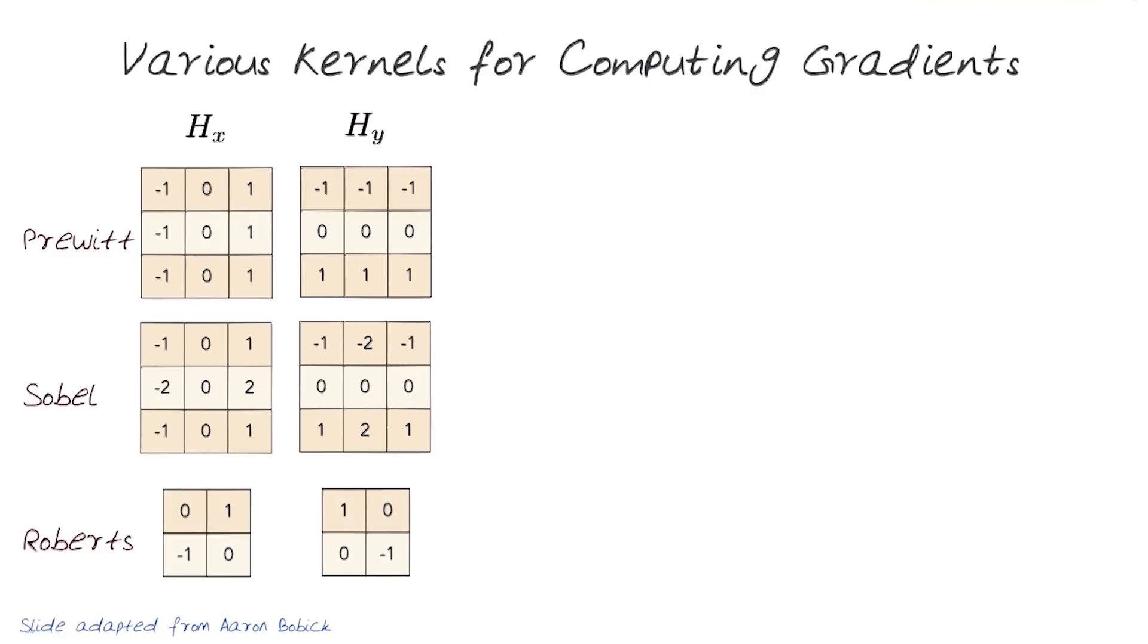The Roberts kernel is even simpler. It places values at the two different diagonals and uses that to compute gradients.